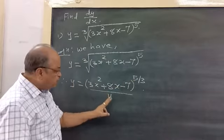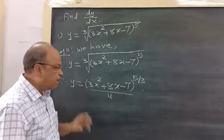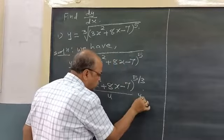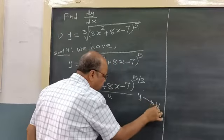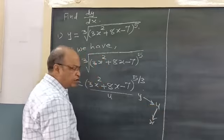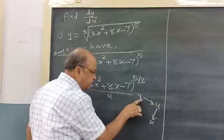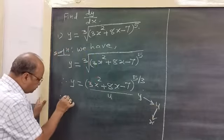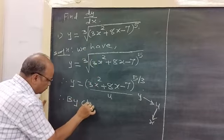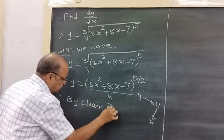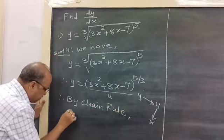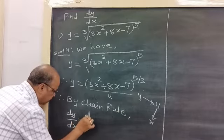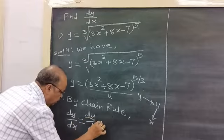So y is a function of u, and u is a function of x. Therefore, by chain rule, dy by dx is equal to dy by du into du by dx.